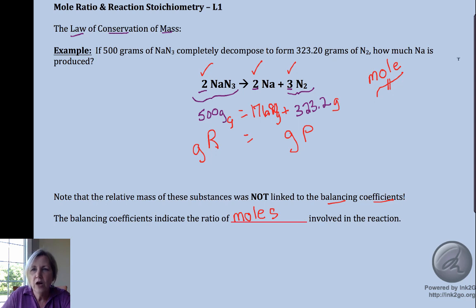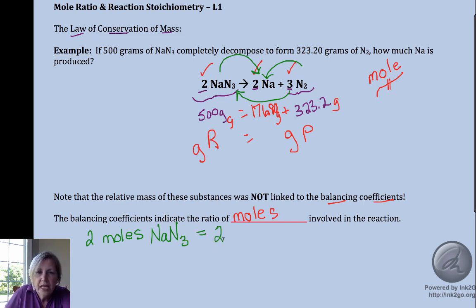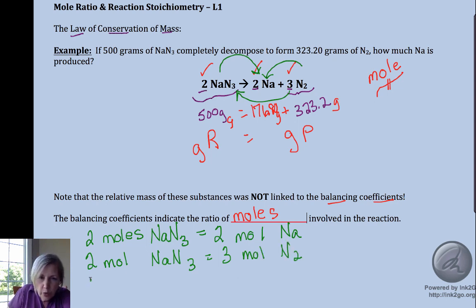So these balancing coefficients are the ratio of the moles involved in the reaction. And what that does is it gives us effectively new conversion factors. So I can go from one substance to another and it doesn't matter which ones I'm going to or from—the question will specify what it wants. I have conversion factors. That balanced equation tells me I have a chemical equivalency or a stoichiometric equivalency of 2 moles of sodium azide for every 2 moles of sodium, 2 moles of sodium azide for every 3 moles of nitrogen.